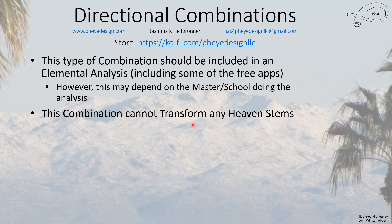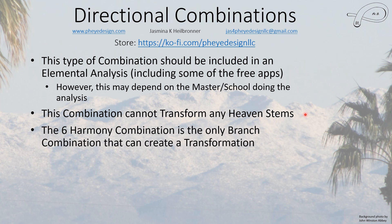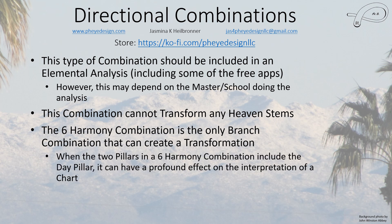A directional combination cannot transform any heaven stems, so you don't have to worry about transformation — which makes this a lot easier to understand. As far as I know, the six harmony combination is the only branch combination that can create a transformation. There is a transformation possible in the heaven stems too, and that will come after I finish covering all the branch combinations. When two pillars in a six harmony combination include the day pillar, this can have a really profound effect on the interpretation of the chart, and it's a really good idea to check what the Chinese Metasoft site says.